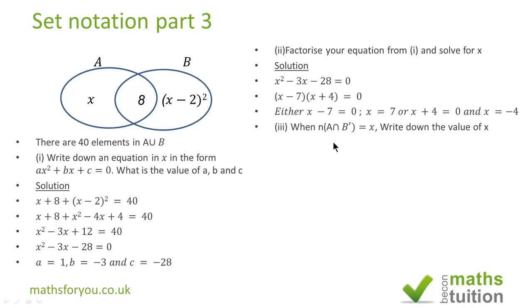Moving on. It says find the number of elements in A intersection B prime. In other words what's not in B that they share with A. Now don't forget there is no universal set. So in effect what we got here is just x and x is 7.